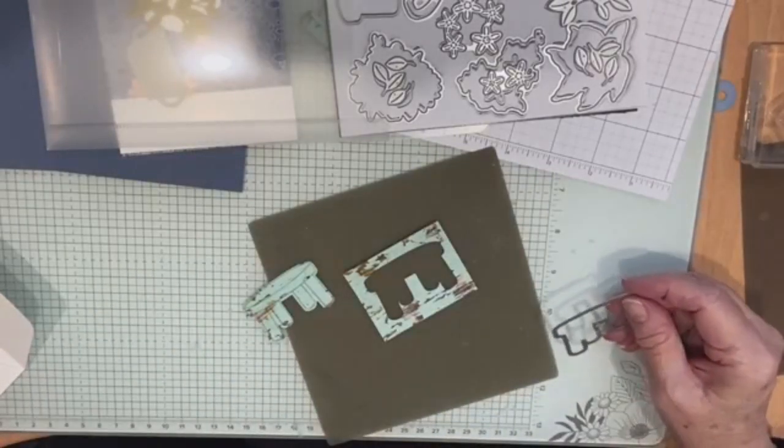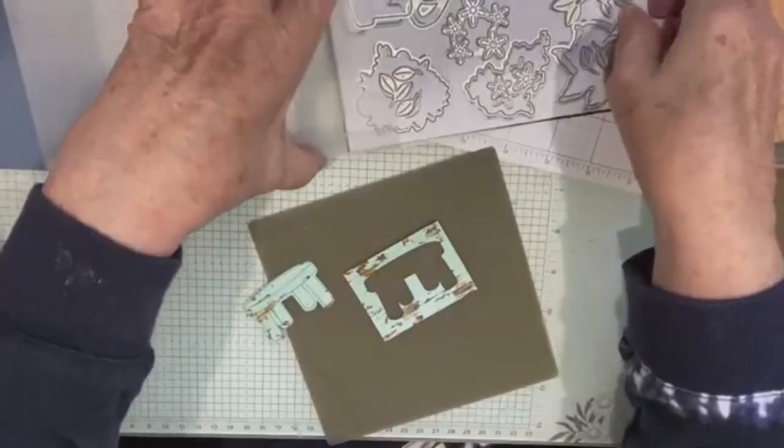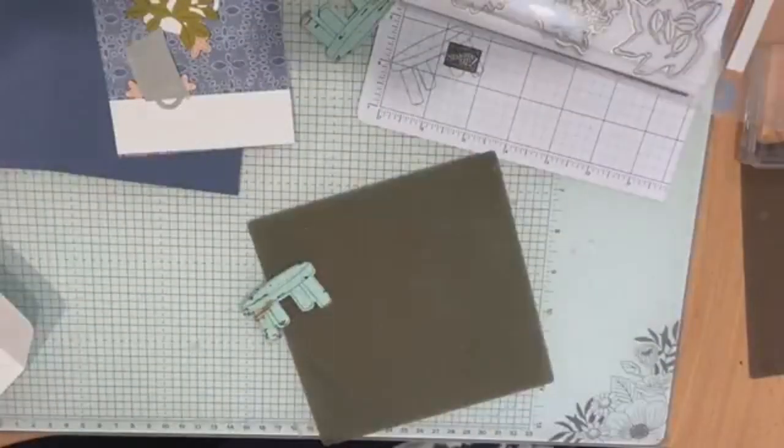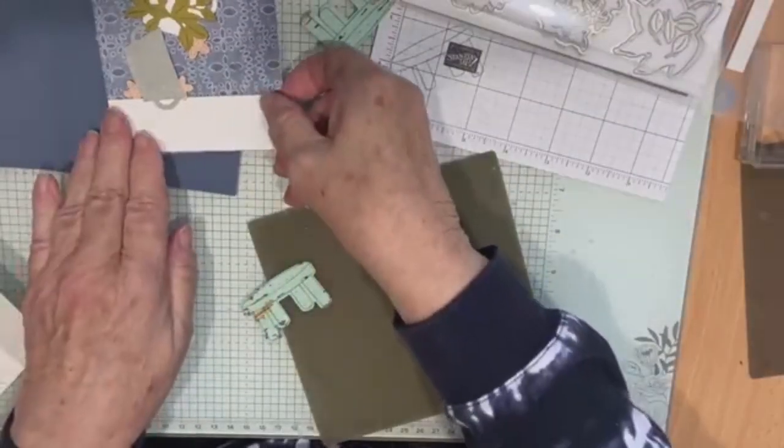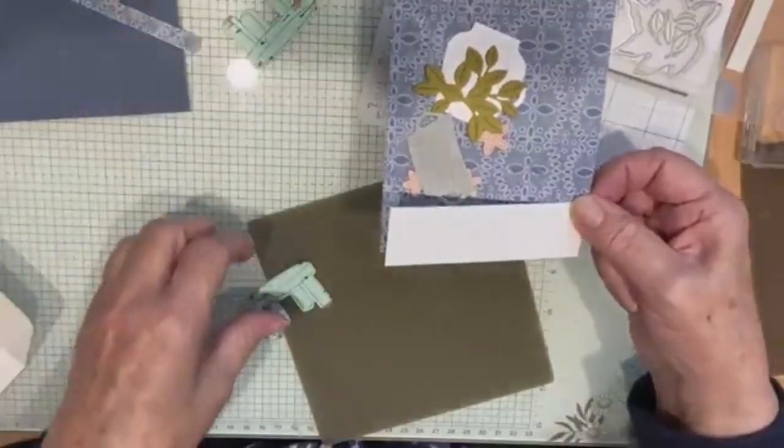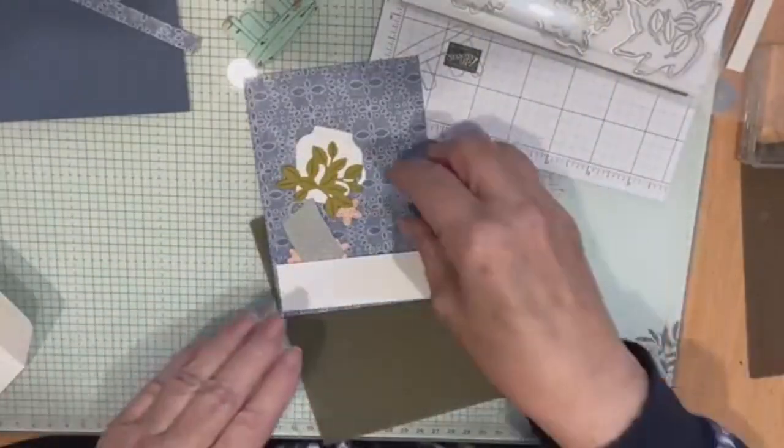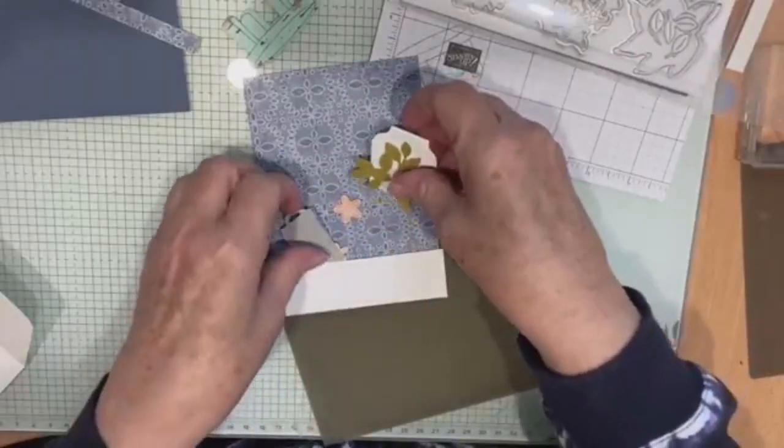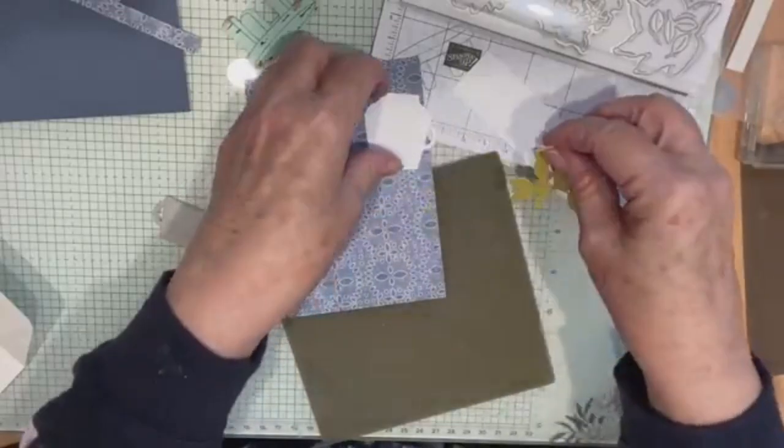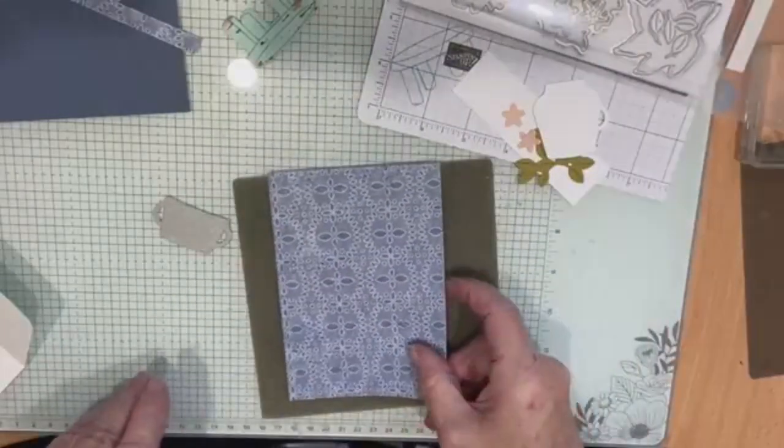And we could use the other side of that. Have another go with that. I'm going to just stamp this again. And we'll die cut it again. Hopefully I have better luck with my die cutting than I have with my stamping. I'll just go quickly run that through. That's better. Still not perfect, but we'll go with that.